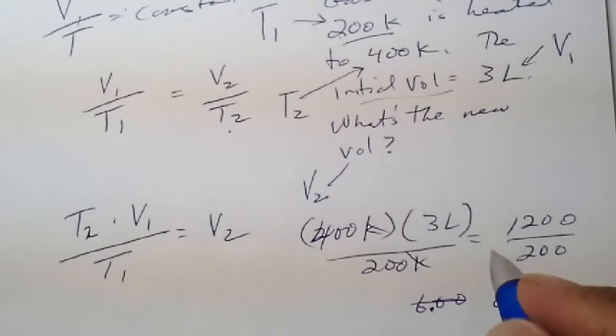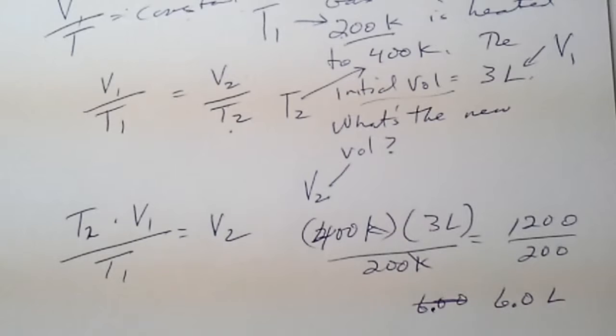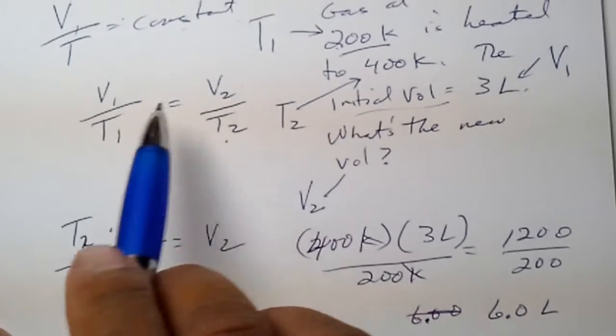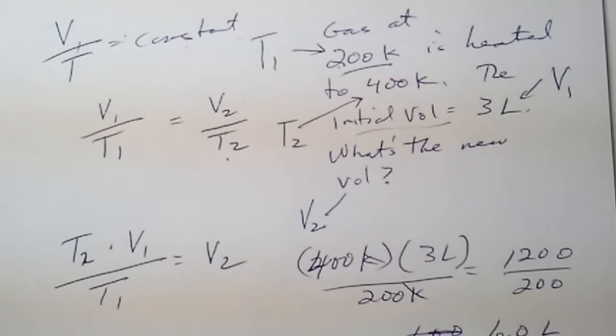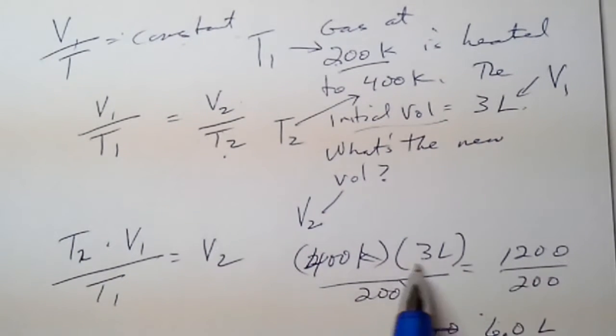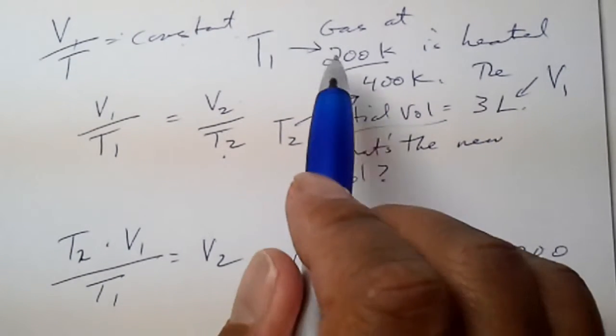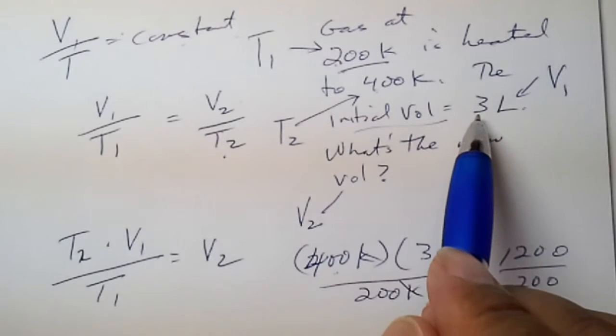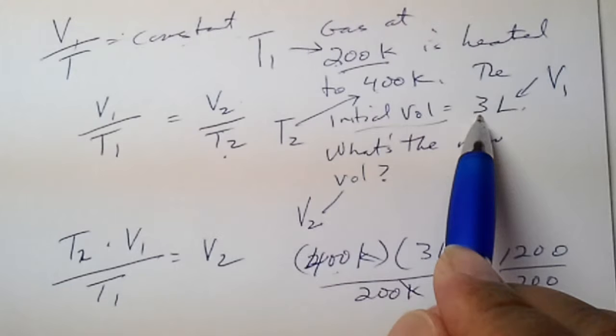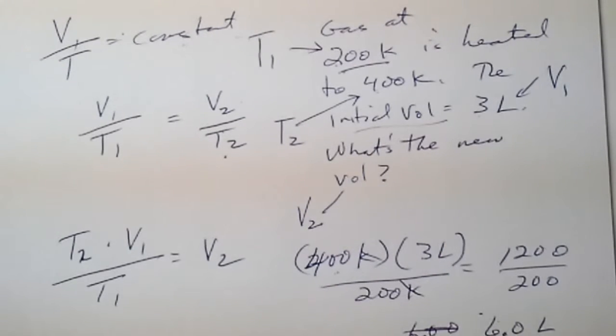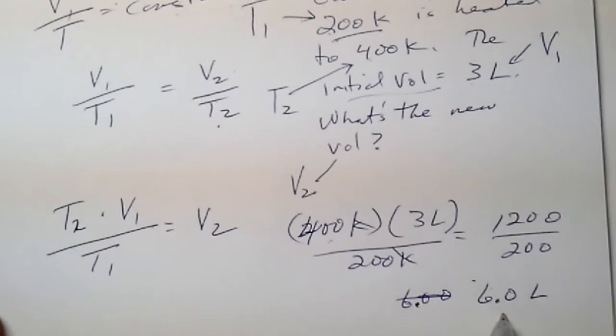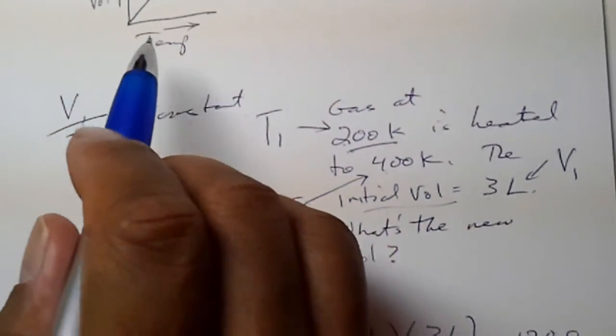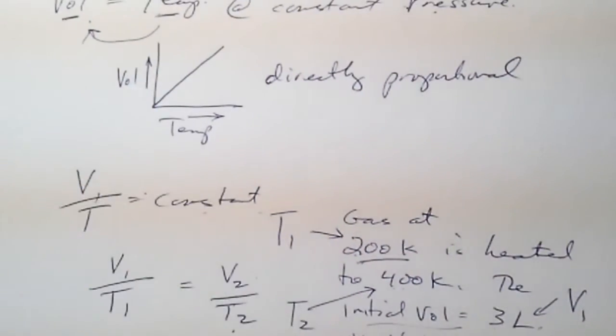We can see here again, if our temperature goes from 200 to 400, our volume must have to go from 3 to 6 because it just doubled, like the temperature doubled, because they're directly proportional.